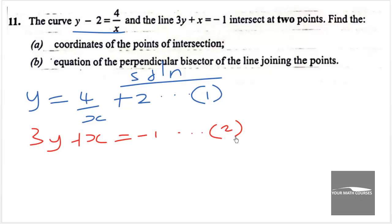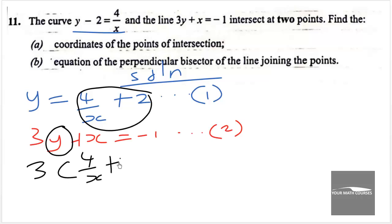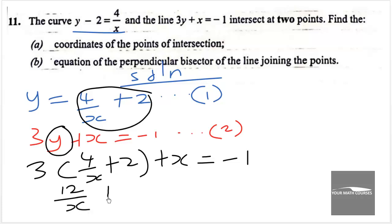We put equation 1 into equation 2 — wherever we see y, we substitute 4 over x plus 2. So we have 3 times (4 over x plus 2) plus x equals negative 1. Expanding: 12 over x plus 6 plus x equals negative 1.